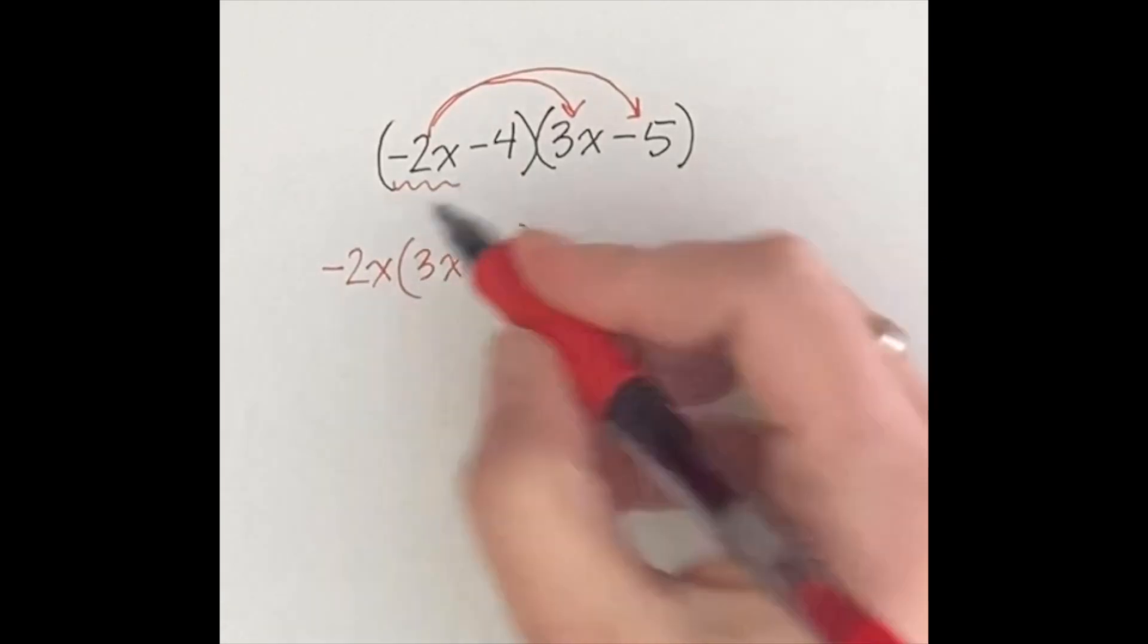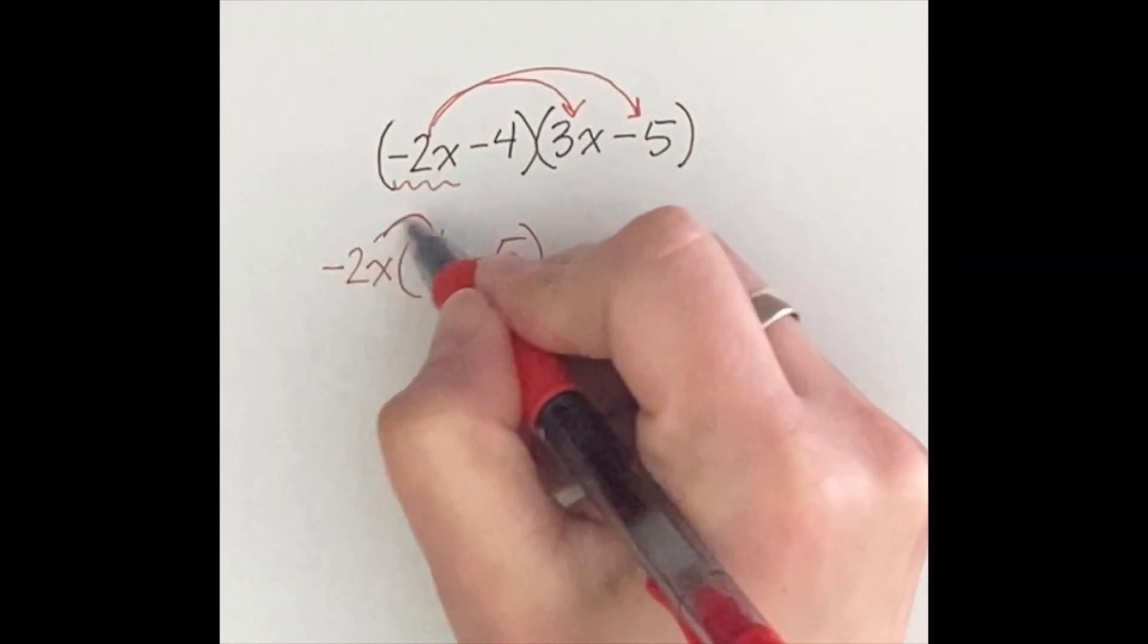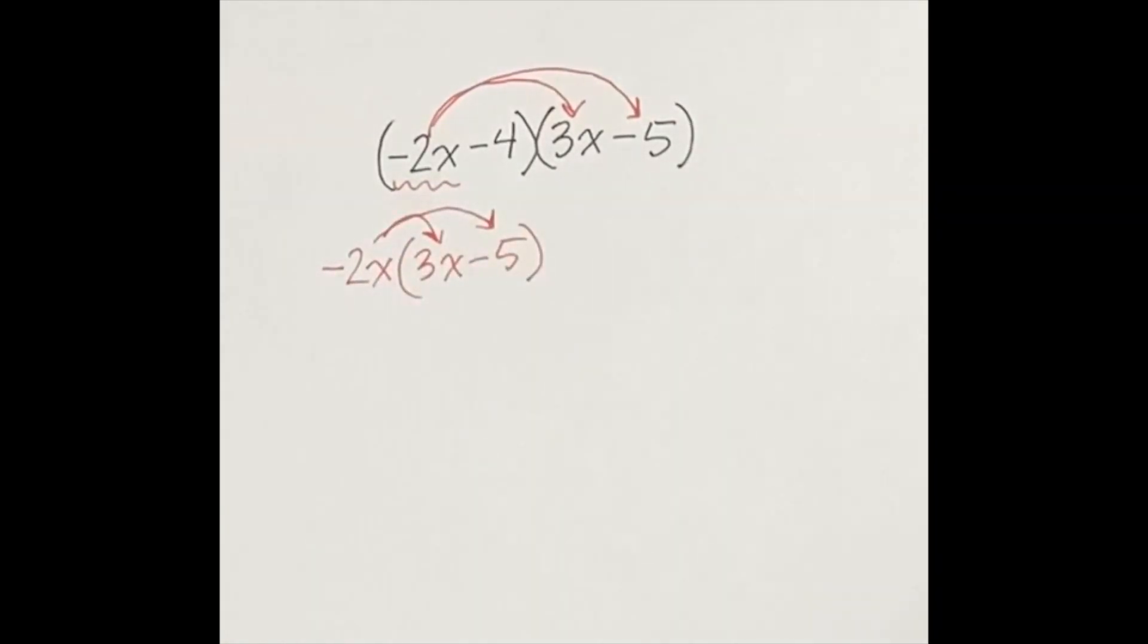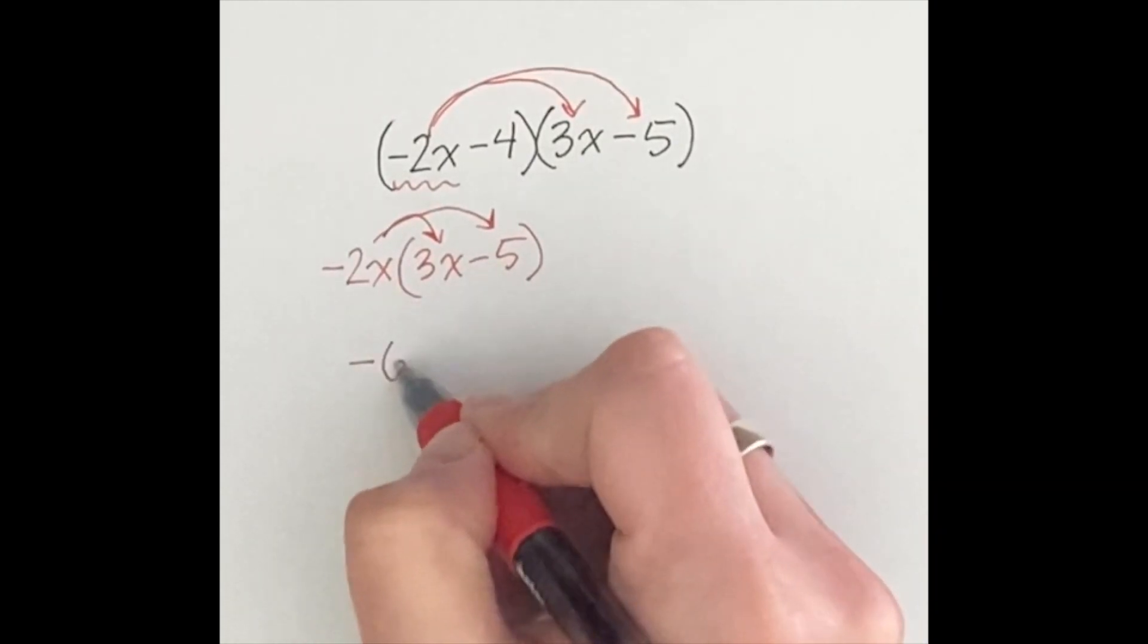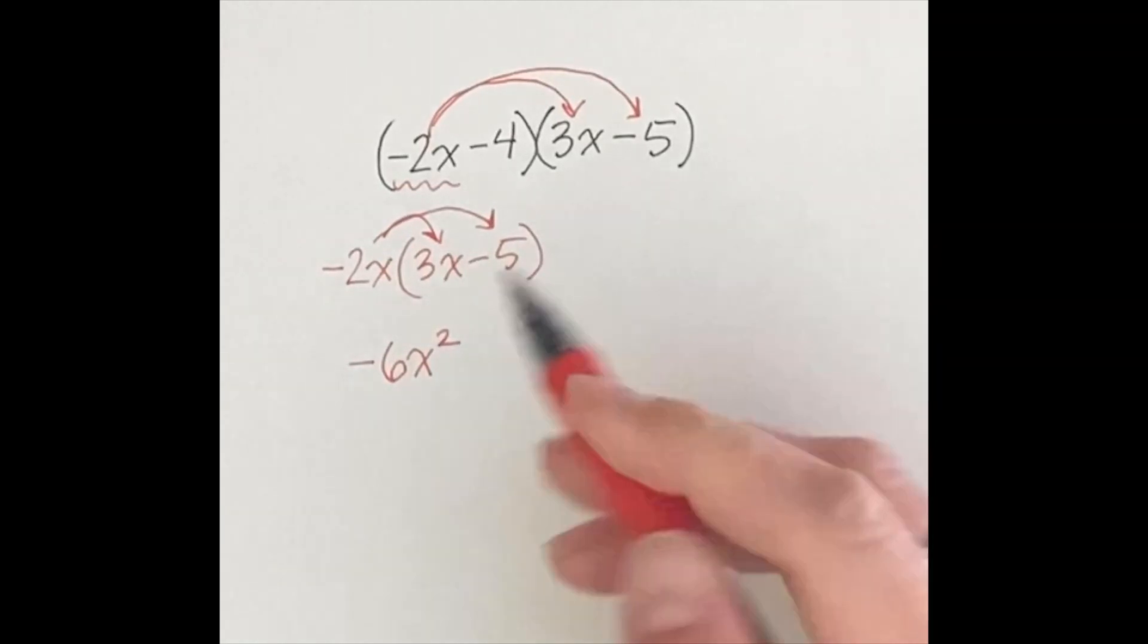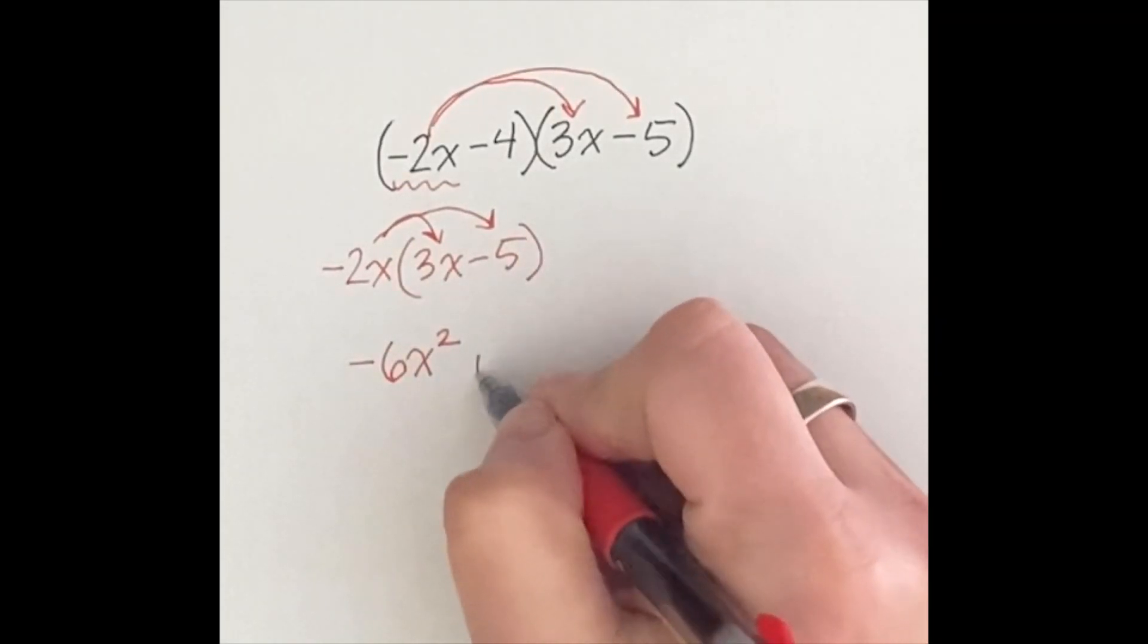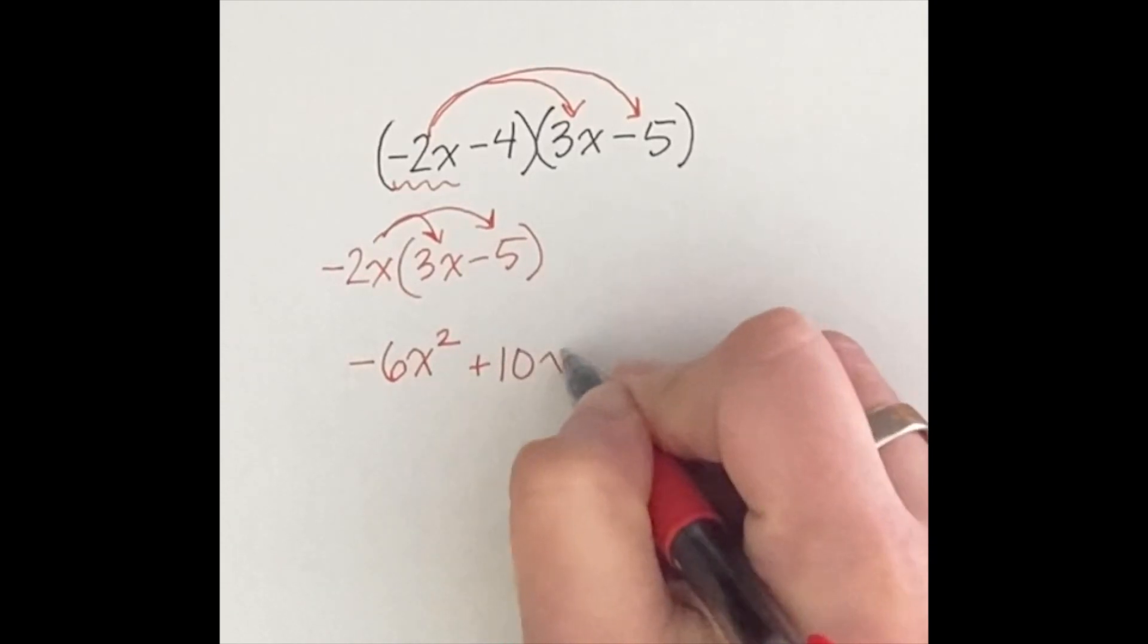When I go ahead and do that actual distribution, negative 2x times 3x would be a negative 6x squared. And negative 2x times a negative 5 would be a positive 10x.